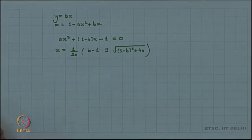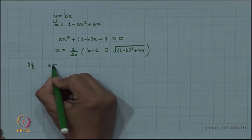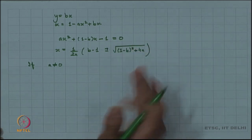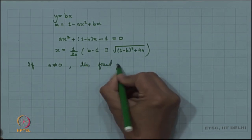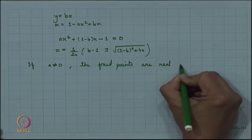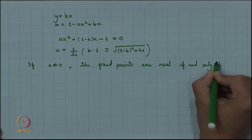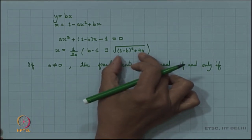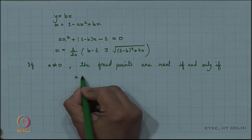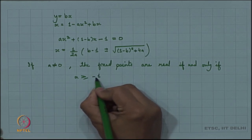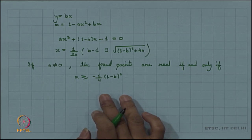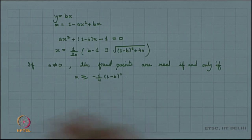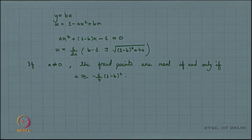The fixed points are real if and only if (1-b)² + 4a ≥ 0, which means a ≥ -(1/4)(1-b)². Unless a is greater than or equal to this value, there may not be any real fixed points. Let p and q be the two fixed points of H_{a,b}.